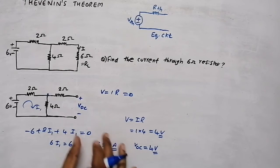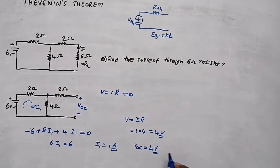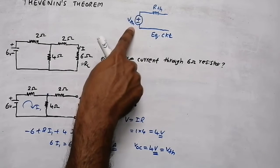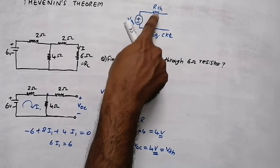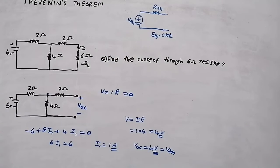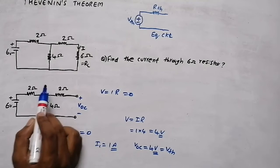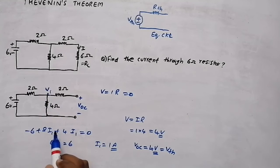In the Thevenin circuit, the open circuit voltage is what we call Thevenin's voltage. So Vth = 4V. I found this using mesh analysis, but nodal analysis works too — assume this node as V1, write the nodal equation, and you get the same answer. Now we need to find the value of Rth.